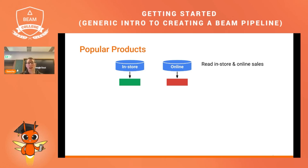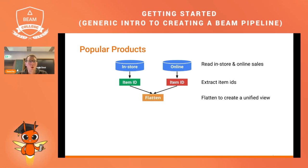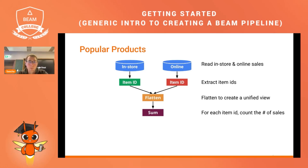The data pipeline works as follows: we have two data sources — in-store data and online data. We connect to both, get all elements, extract the item IDs and quantities sold, flatten the data to create a unified view of both systems, and then create the sum to know how many times each item has been sold.